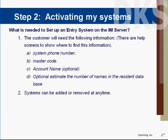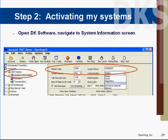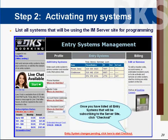You can add or remove a system at any time. To find the entry system phone number and master code, go to your programming software and look for system information. There you will see a window that displays the master code and phone number for that particular entry system. Enter this information into the fields provided and click Add, and they will be added to your list of active entry systems.